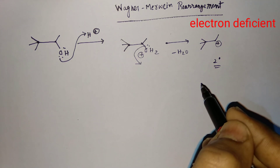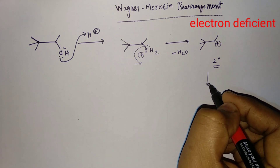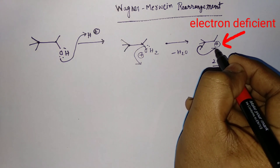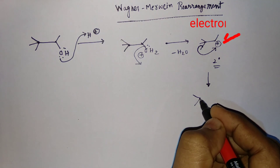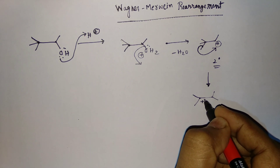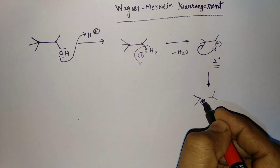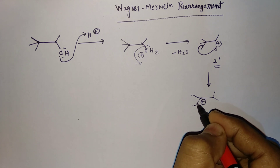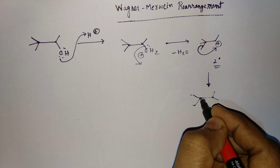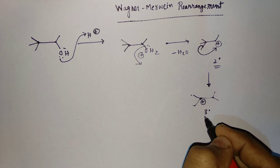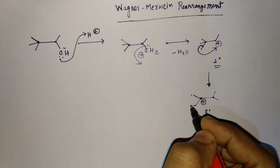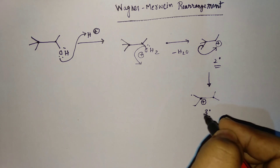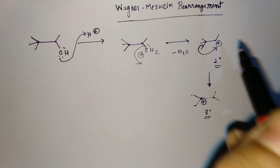But there is a possibility to form a tertiary (3°) carbocation. The methyl group will migrate, forming a carbocation where one, two, three different carbon atoms are attached to the center — making it a 3° carbocation.